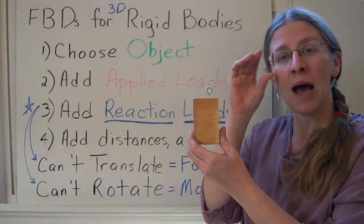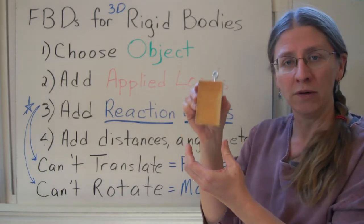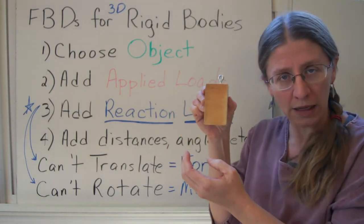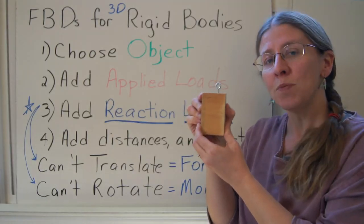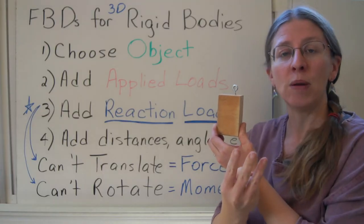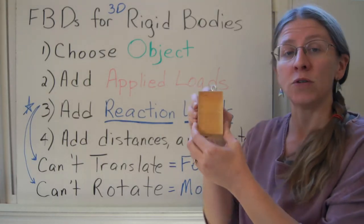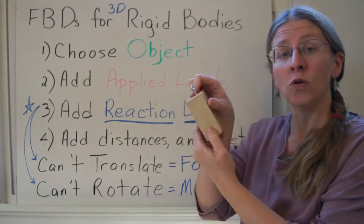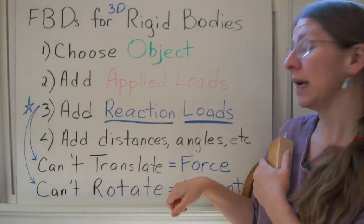Now in three dimensions, any object like this can move up and down, right and left, or forward and back. Every one of those possibilities gives you a possible reaction force. So you have three possible reaction forces. It can rotate forward and backwards, right and left, or twist. So you have three possible reaction moments.